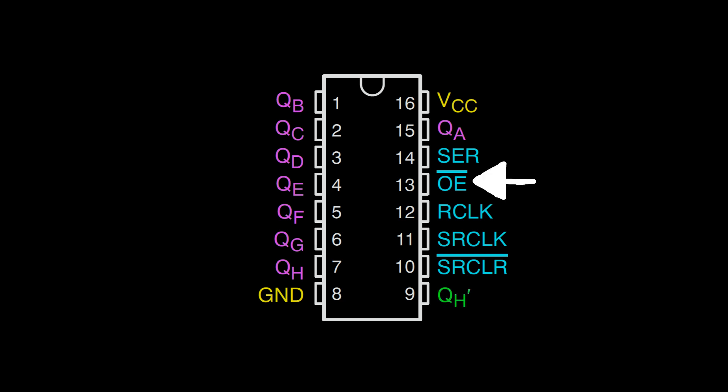This pin is the output enable pin. It turns the outputs on or off, depending on if you give it a high or low value. The line above the label means that it is active low. So if the line is driven low, which means connected to ground, it will turn on the outputs. Tie it to the five volt rail and the outputs will turn off. The output memory does not reset when the output turns off. Their states are saved in memory until the output enable pin is driven low again.